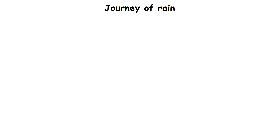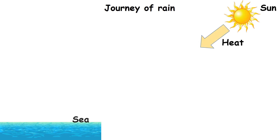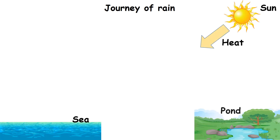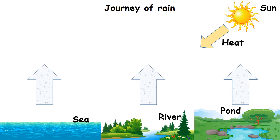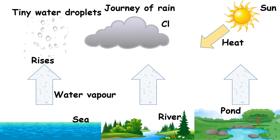Journey of Rain. Heat from the sun turns water from sea, pond and river into water vapour. This water vapour rises, cools and changes into tiny water droplets which form clouds.